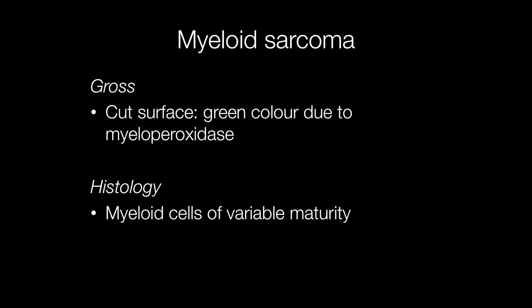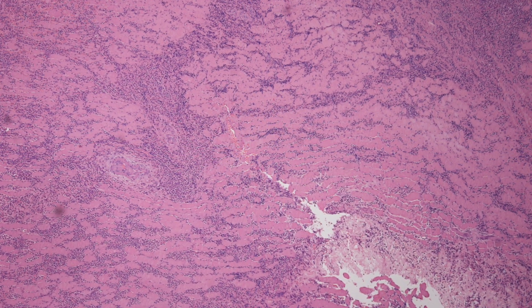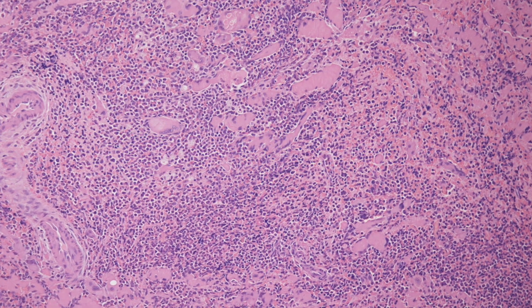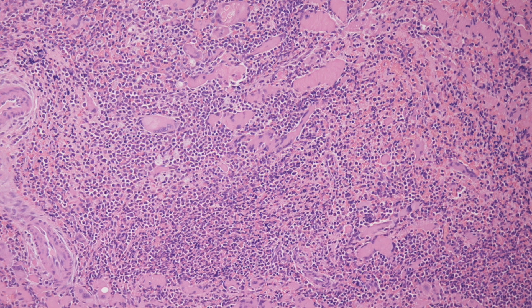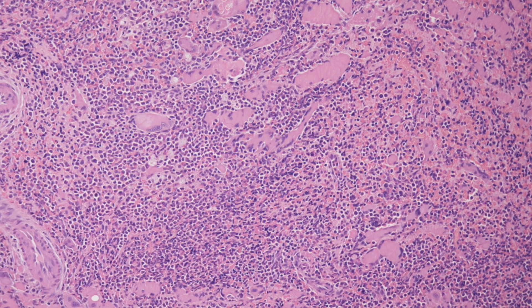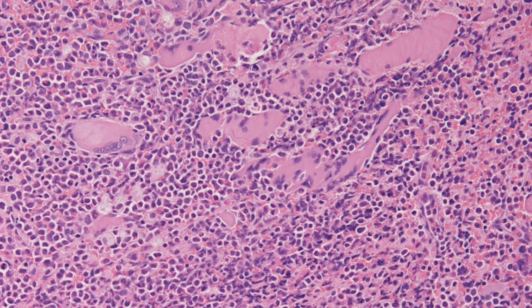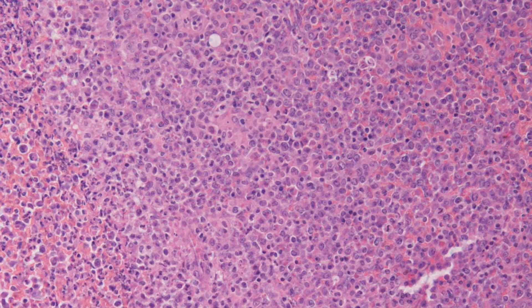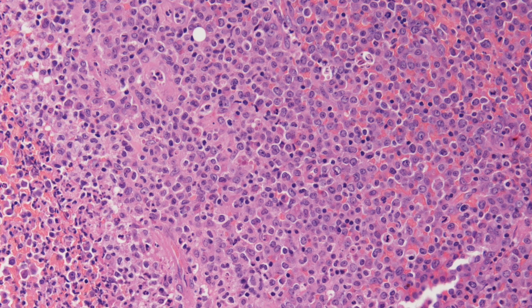Histologically, myeloid sarcomas, as the name implies, are composed of myeloid cells of variable maturity. Here is a low power view of a myeloid sarcoma. You can see that the connective tissue is being diffusely infiltrated by the malignant cells. As we have a closer and closer look at the cells forming this tumour, you can see that they are pleomorphic and composed of myeloid cells of varying maturity.